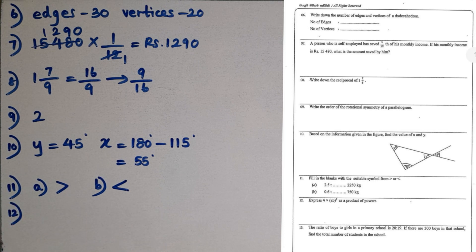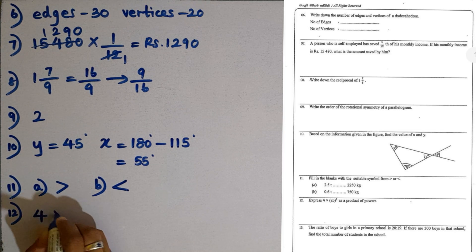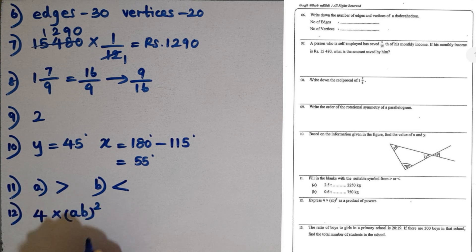Question number 12. Express 4 multiplied by AB to the power 2 as a product of powers. 4 can be written as 2 to the power 2. Then you can take the power 2 for each algebraic term: A to the power 2, then B to the power 2. This is the way to write it.